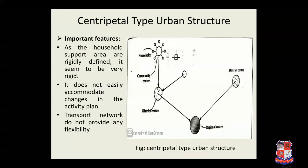Now the first, centripetal type of urban structure. In this figure, households concentrate first on the community center, while a number of community centers are directed toward the district center, and the district centers finally focus on the regional center. The important features of this type of structure are that household support areas are rigidly defined. It seems to be very rigid, does not easily accommodate change in the activity plan, and the transport network does not provide any flexibility.